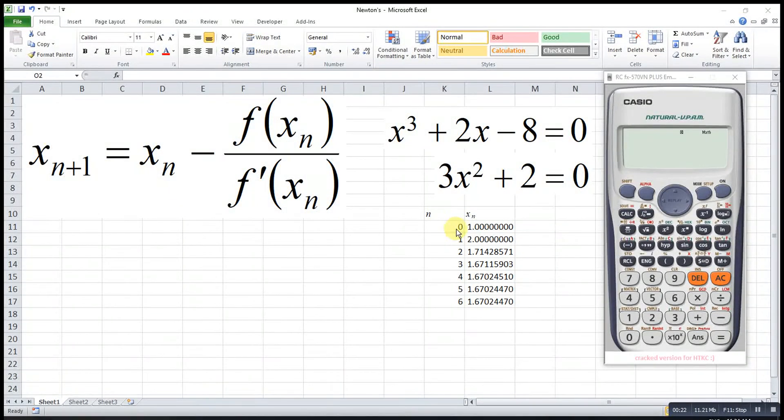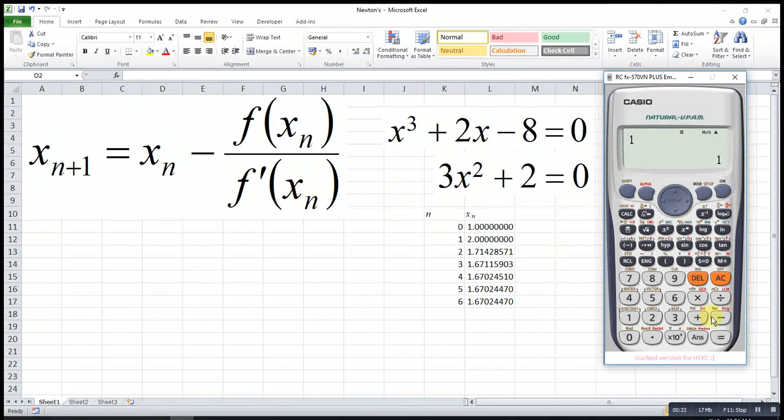And if let's say we consider the initial value is 1, so what we have to do is press 1 then equal. After that, we make use of the ans key. We let the x value be answer.